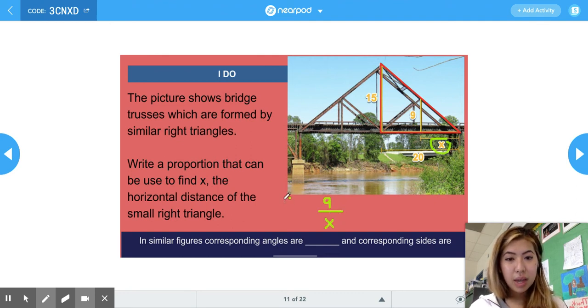So this is the height of the smaller triangle and then the base. So we have height over base basically. And so I first started with the smaller triangle and then for the bigger triangle, the height is 15, the base is 20.